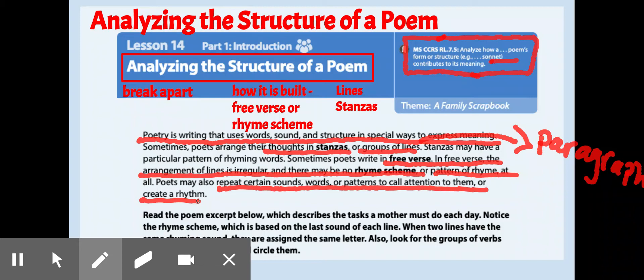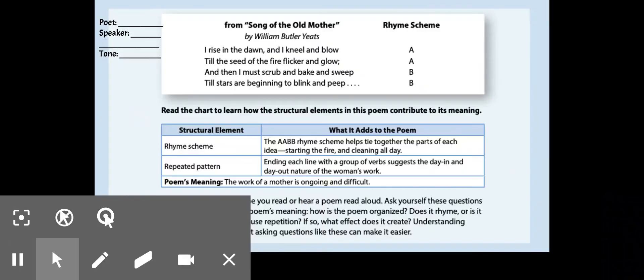All right, so below, when I'm going to switch to my slide, we have a poem by William Butler Yeats. And in this one, it's going to even tell us that it describes the task a mother must do each day, and it wants us to actually pay attention to the rhyme scheme, and it even goes on to remind us what that means again. That's that last line, that last part of each line, and we're trying to see if it rhymes with other lines. Now, another thing we're also going to look for is the verbs. We're going to make sure we circle our groups of verbs at the end of each line, because that's another thing that's repeating in this particular poem.